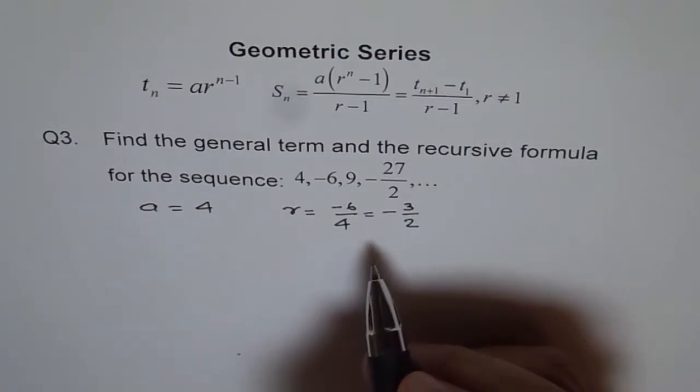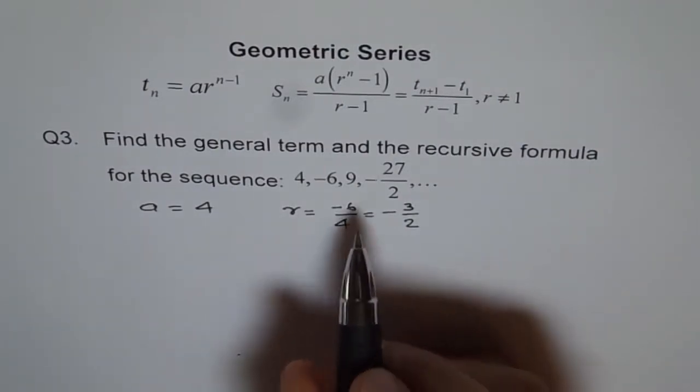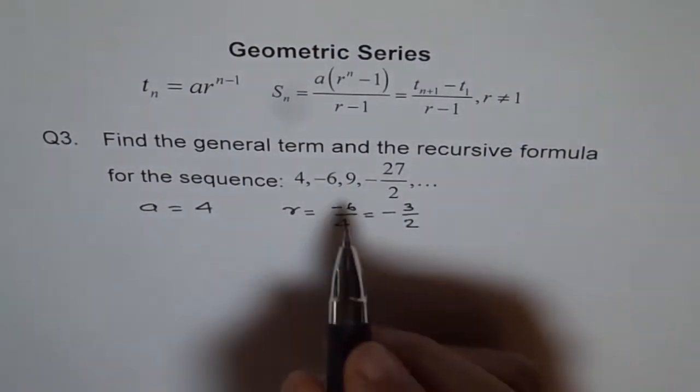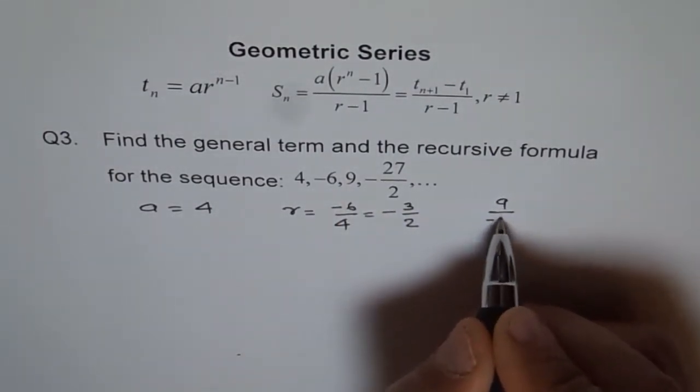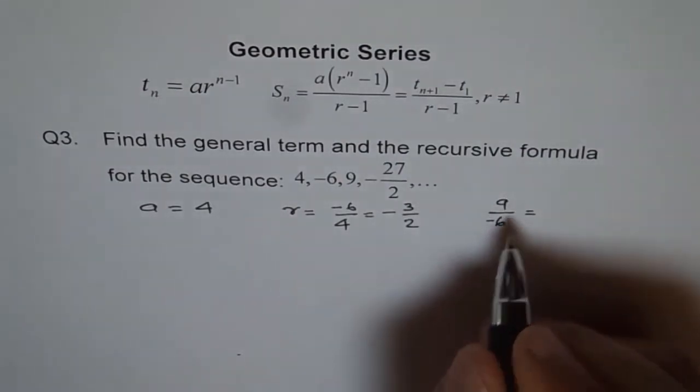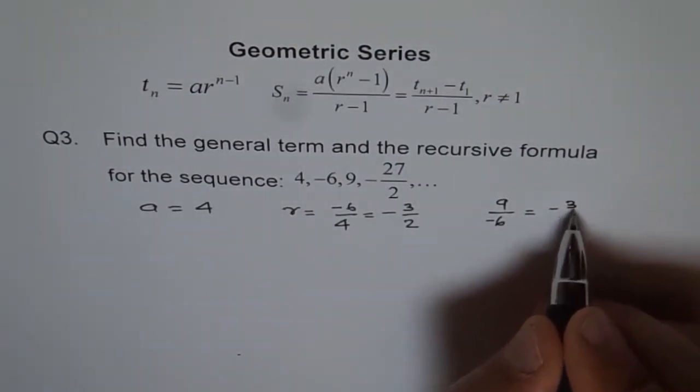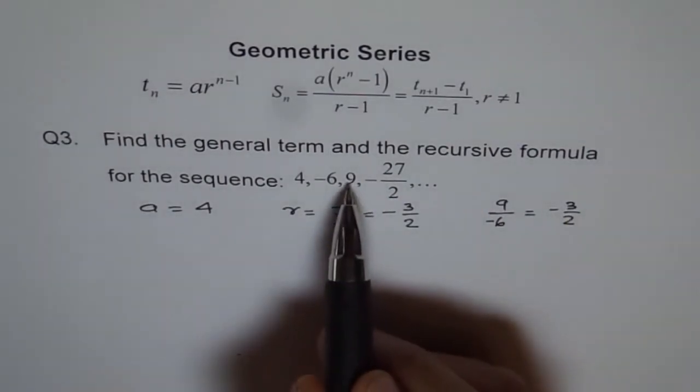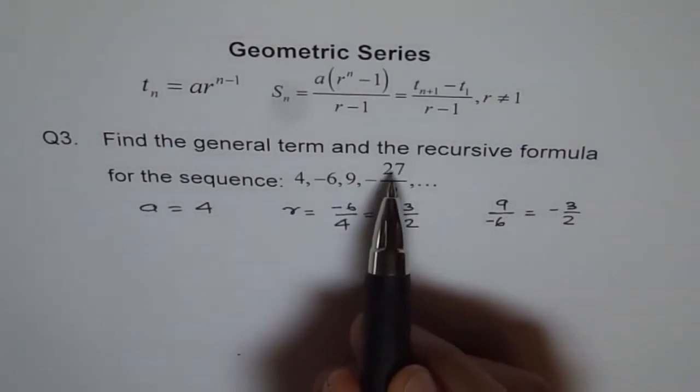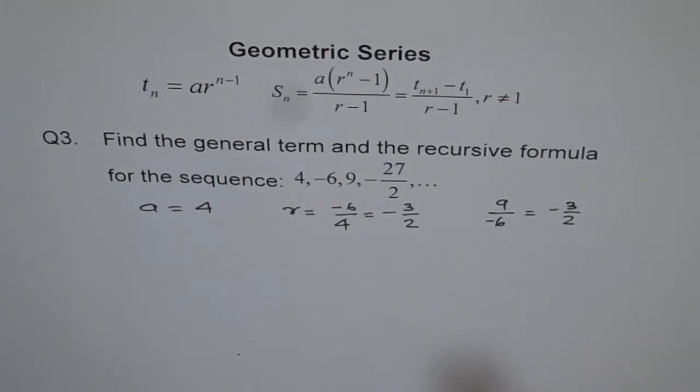Let's check if it is really a geometric sequence. Let's find the ratio of the next two terms. If we do that, we get 9 over minus 6. Both can be divided by 3 and we get minus 3 over 2. It works. And if I multiply 9 by minus 3, I get minus 27. Divide by 2, I get the next term.